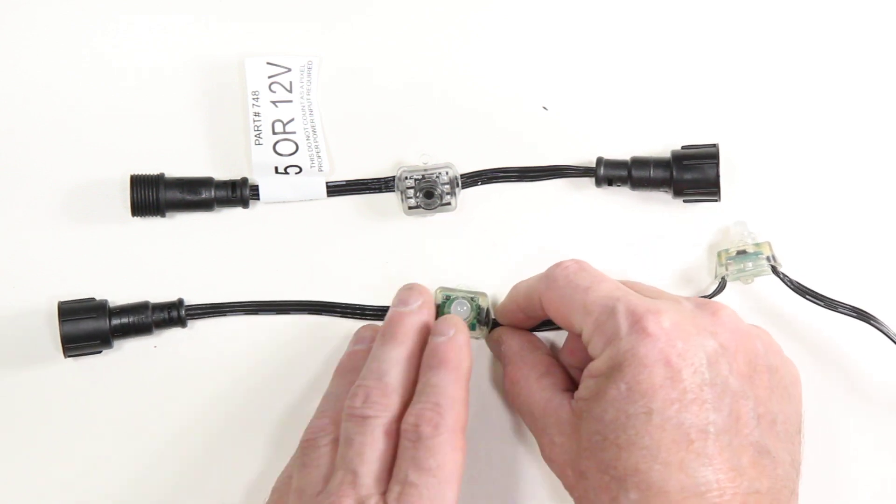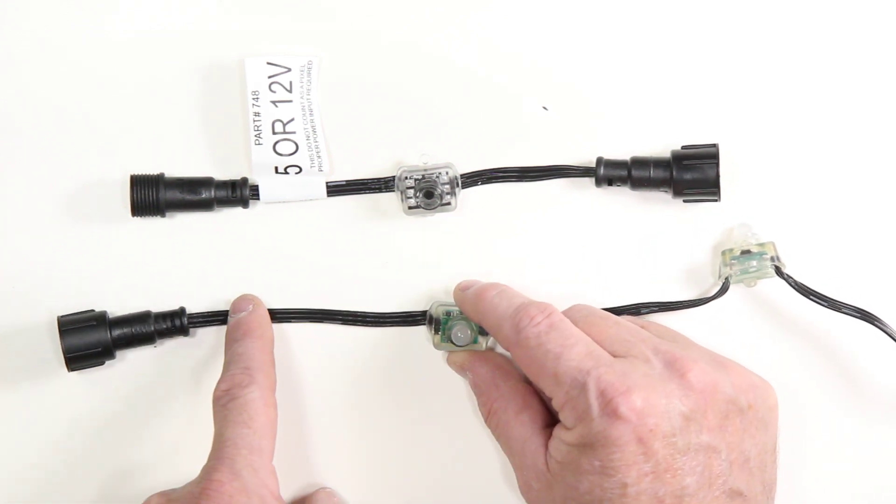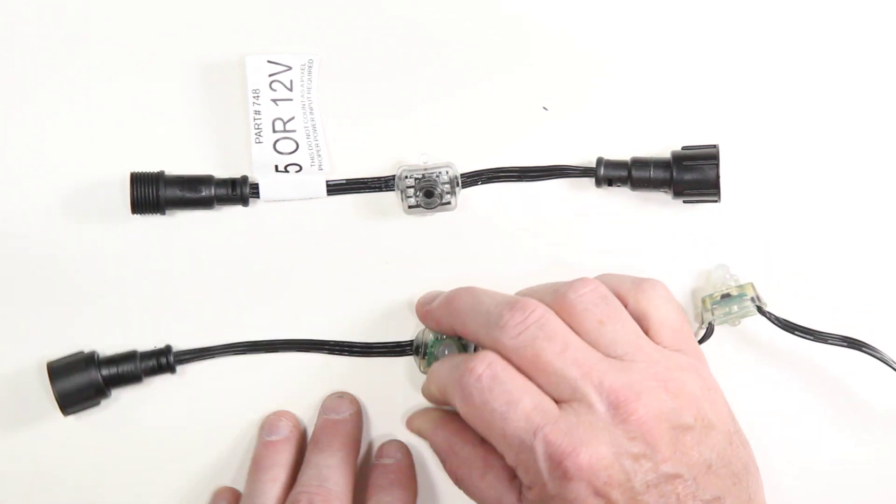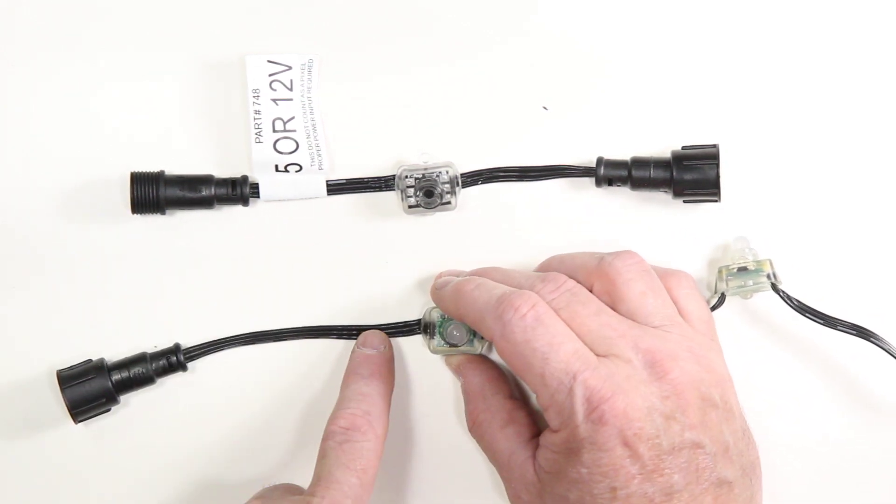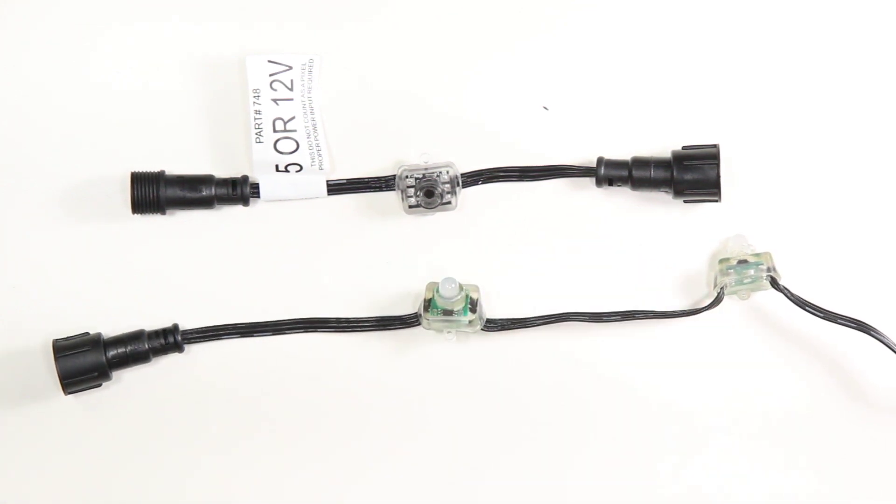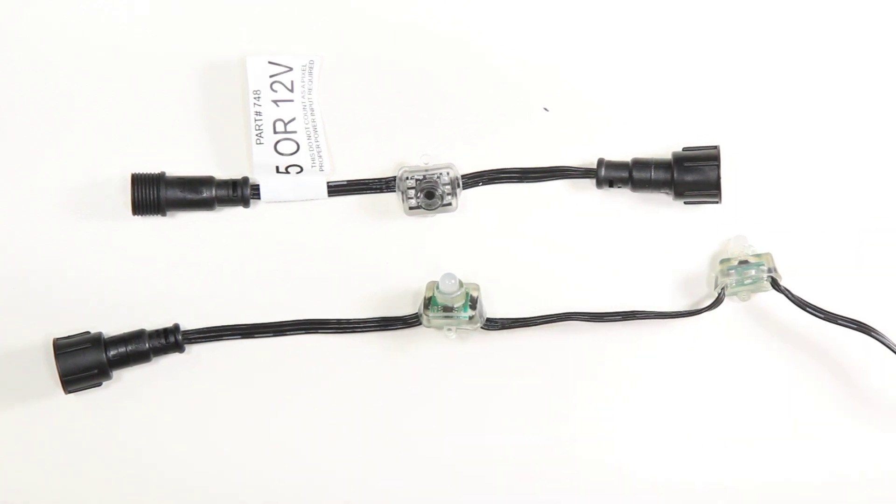While we have power going down here, and we can overcome losses in this wire because maybe it's thin or maybe it's low quality or maybe it's just long distances, we can increase the voltage. But with the data signal, it's going to generally be around 3.3 volts, which is even lower than the 5 volts.